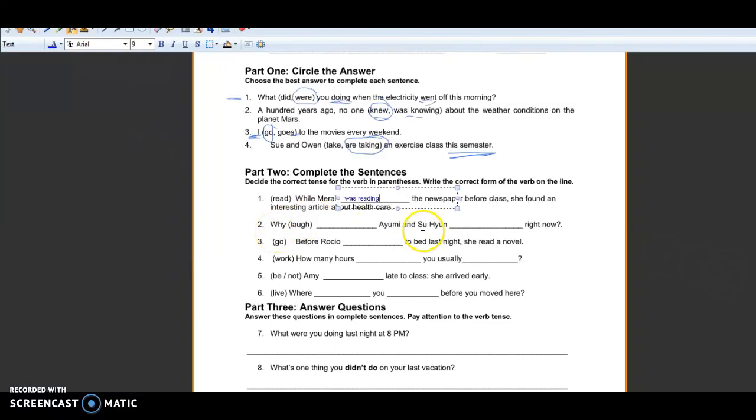Number two. Why laugh Ayumi and Suhyun right now? Here we see an important keyword right now. Right now is the keyword in the sentence. Right now means we're talking in the present progressive. So we need a present be verb and an ing verb. So for the question form we need to put first the auxiliary verb. Why are Ayumi and Suhyun? Why do we use are instead of is? Because it's two people, so it's they. So why are two people? Why are they? Then we need to put the other verb, the main verb. This is our helping verb and this is our main verb. So this one we need to put with ing because it's in the present tense.